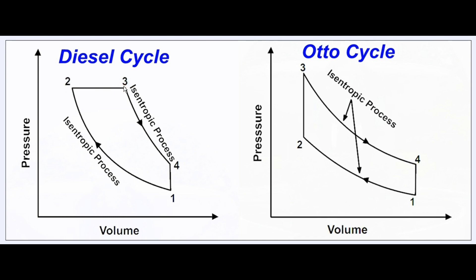The important difference between the diesel and Otto cycles is in the 2-to-3 area. On the diesel, you're only compressing air — no fuel is added until point 2, near top dead center. The high compression ratio raises the air temperature past the auto-ignition point of fuel, so as fuel is injected it burns spontaneously. On the Otto cycle, a fuel-air mixture is introduced earlier, compressed together, and the spark lights it off, burning very quickly from 2 to 3.